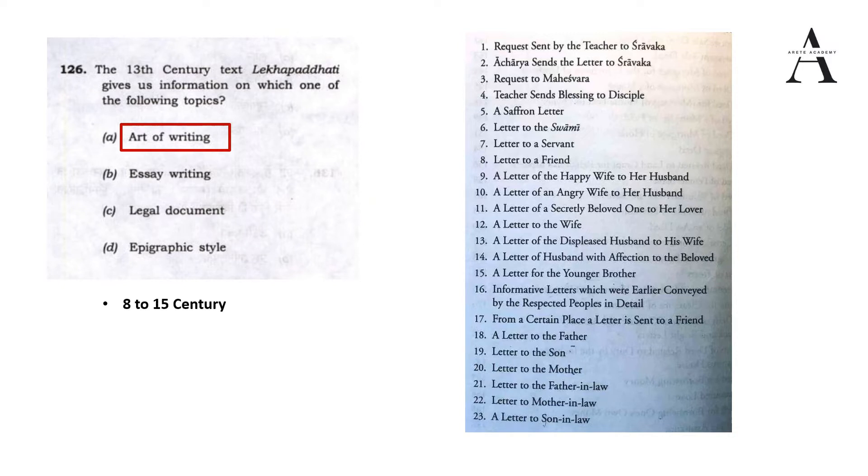All these areas are covered — for example, point 21 is a letter to a father-in-law, point 8 is a letter to a friend, and point 4 is a teacher sending blessings to disciples. This document contains rules for drafting a variety of documents: land grants, treaties between rulers, and personal correspondence. It tells us about the socio-political life of that time.